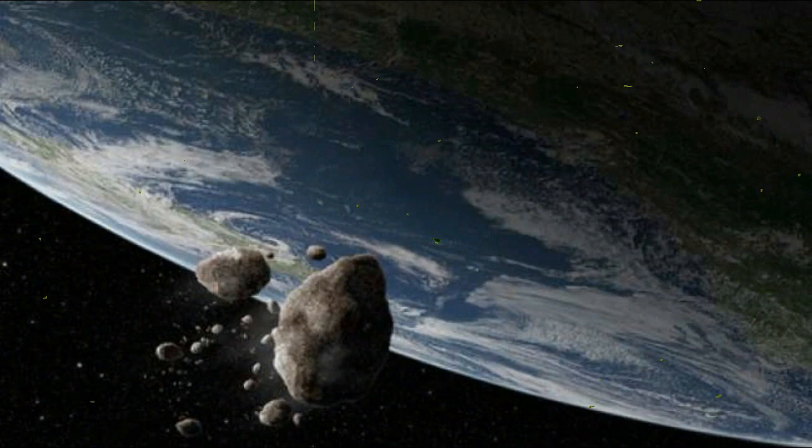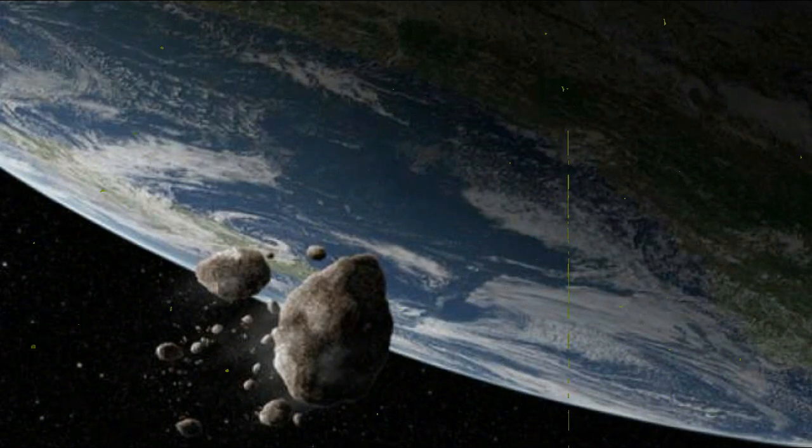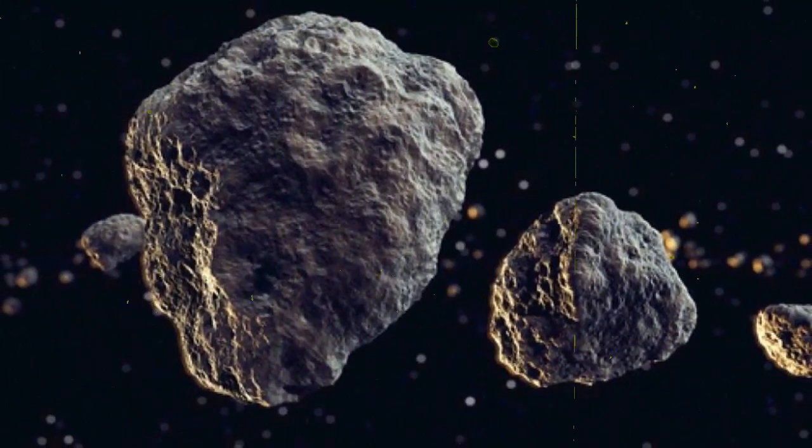NASA uses telescopes on the ground and in space to find and monitor NEOs, to track their orbits and identify their size, shape and composition, and to pinpoint potentially hazardous objects, managing these efforts through the agency's Planetary Defense Coordination Office.